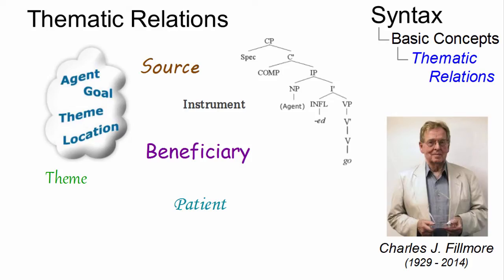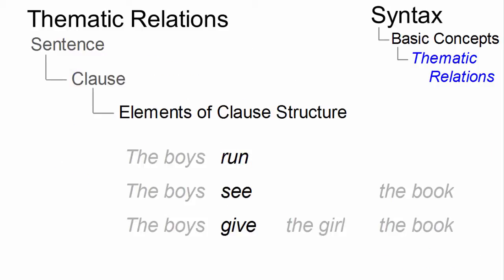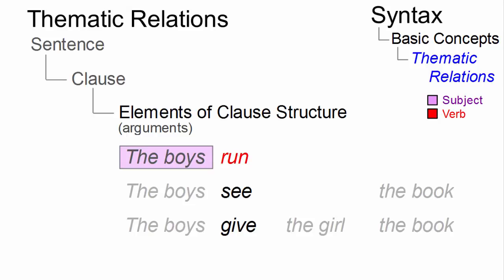Thematic relations express the role that is assigned to the arguments of a verb in a sentence. Here are three sentences. For example, 'run', as in 'the boys run', has one argument — the boys — which functions as a subject.